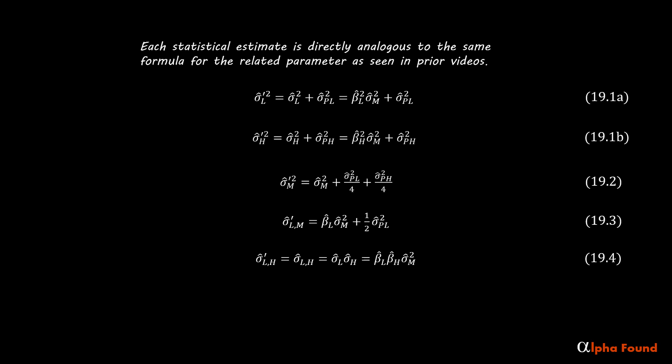Every parameter with a prime in the forward model has a corresponding parameter estimate originating from market data. Each statistical estimate is directly analogous to the same formula for the related parameter as seen in prior videos. The only difference is that the new ones are estimates which come from data and therefore get a hat symbol.